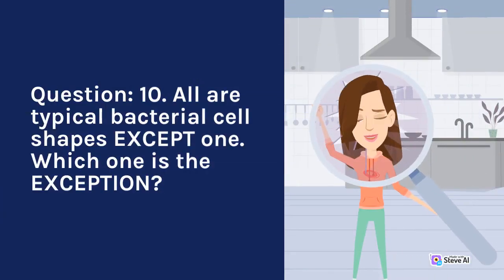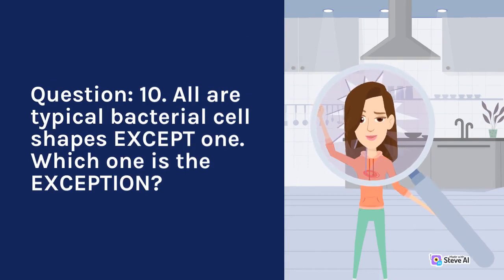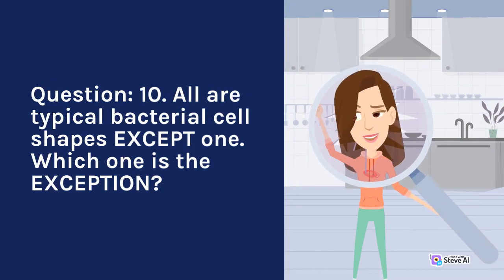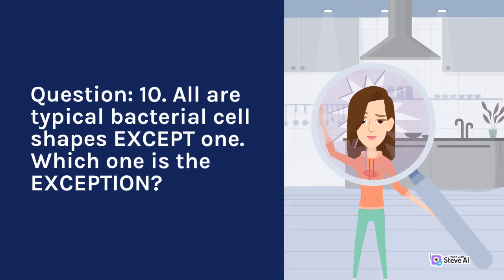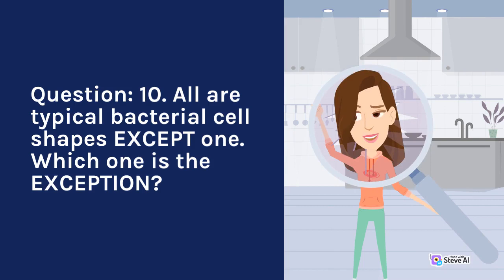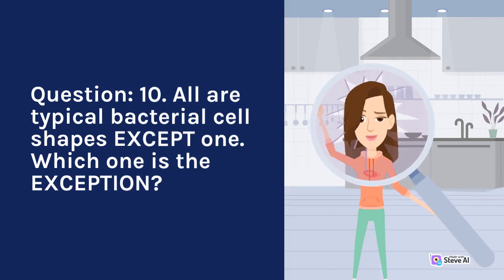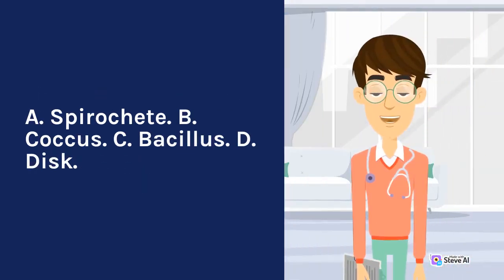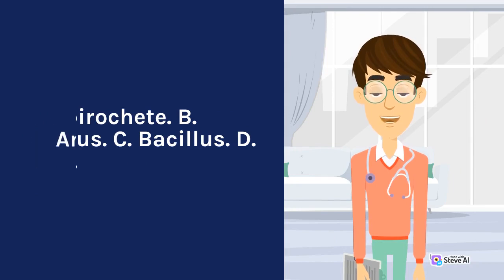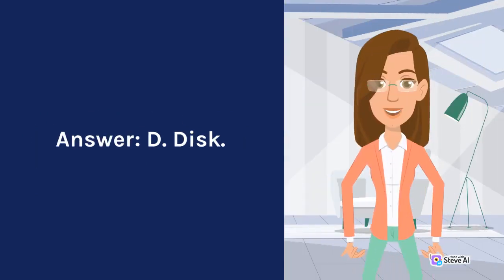Question 10. All are typical bacterial cell shapes except one. Which one is the exception? A. Spirochete. B. Bacillus. C. Coccus. D. Disc. Answer: D. Disc.